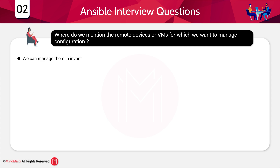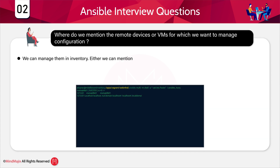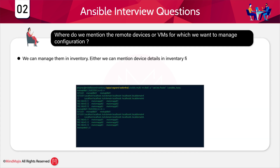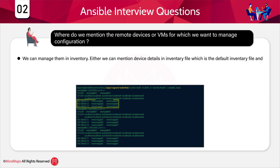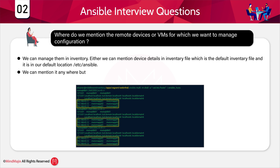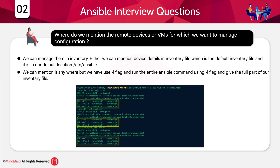We can manage remote host information in an inventory file. The default inventory file is at /etc/ansible. Alternatively, we can place it anywhere but must use the -i flag and pass the full path of the inventory file when running the Ansible command. So we can write the inventory file anywhere, but we have to make sure we are passing it dynamically during runtime.